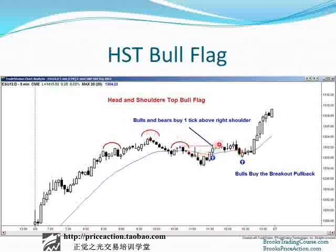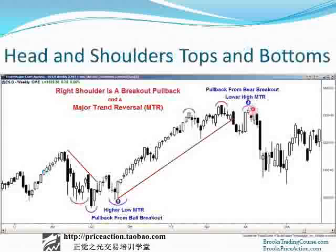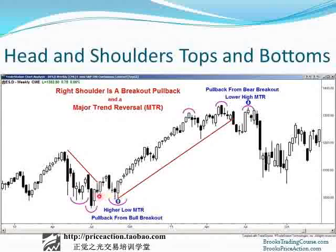We had a bear trend, a bull breakout, and then a pullback to a higher low major trend reversal. When the market reverses after a head and shoulders top, it is a lower high major trend reversal, and it's better to look for major trend reversals than head and shoulders tops. The right shoulder is a pullback from the bear breakout below the bull trend line. You can look at the modules on major trend reversals for more information. So I see the right shoulder of a head and shoulders top as simply a lower high major trend reversal — a pullback from the bear breakout below the trend line. We have a bull trend, a break below the bull trend line, and this is a pullback from that breakout. I prefer to call it a lower high major trend reversal. The same at the bottom: we have a head and shoulders bottom — I would call it a higher low major trend reversal. A bear trend, a breakout above the trend line, and then a higher low.